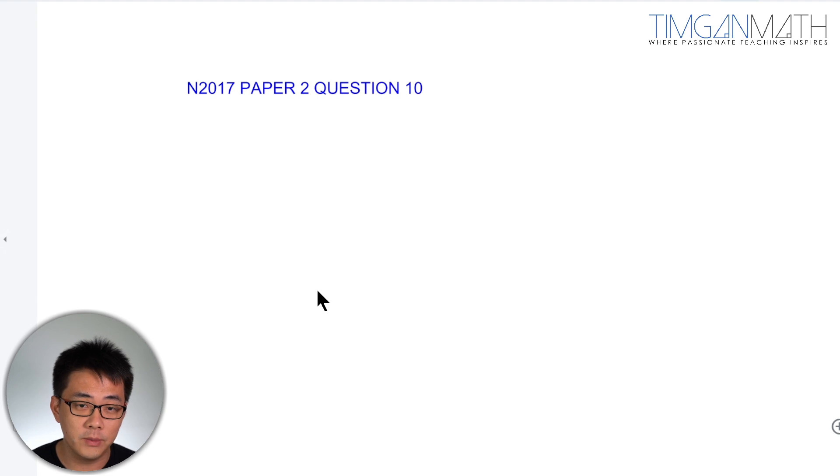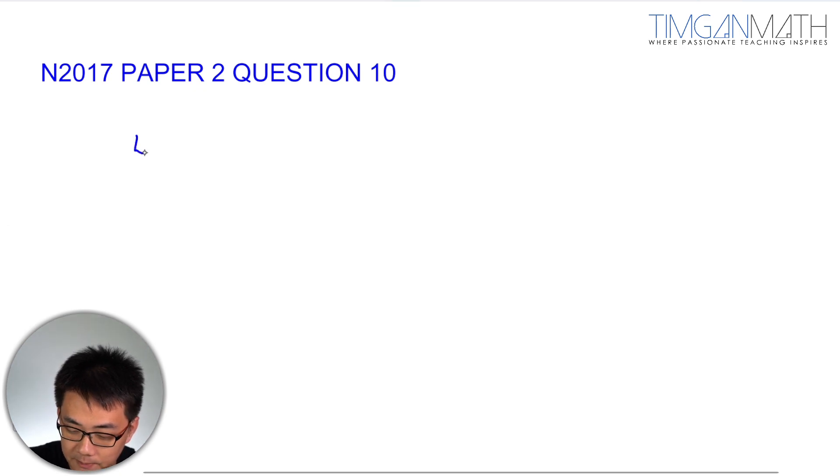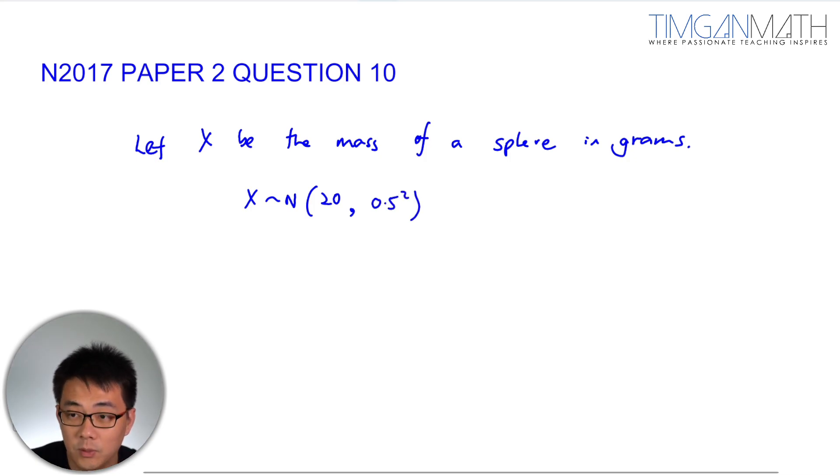A small component for a machine is made from two metal spheres joined by a shorter metal bar. The masses in grams of the spheres have this distribution. So in this case here, I'm just going to let X be the mass of a sphere in grams. So this would be X, normally distributed with mean 20 and variance 0.5 squared.